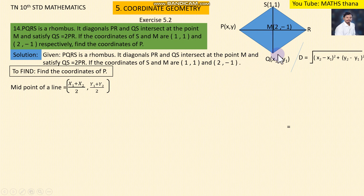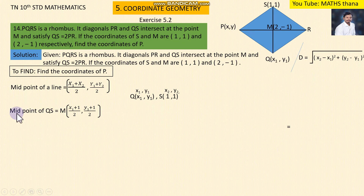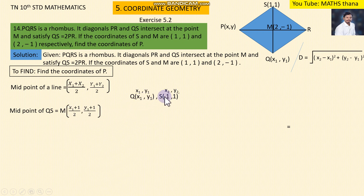QS has midpoint M. Let Q be (x1, y1). Since the midpoint of QS equals M, applying the midpoint formula: (x1 + 1)/2 = 2 and (y1 + 1)/2 = y-coordinate of M.